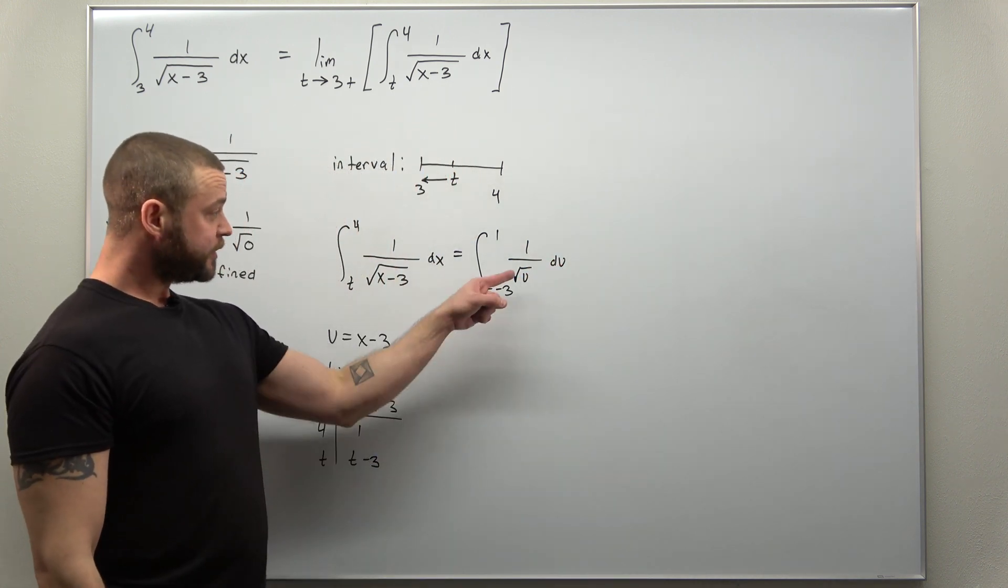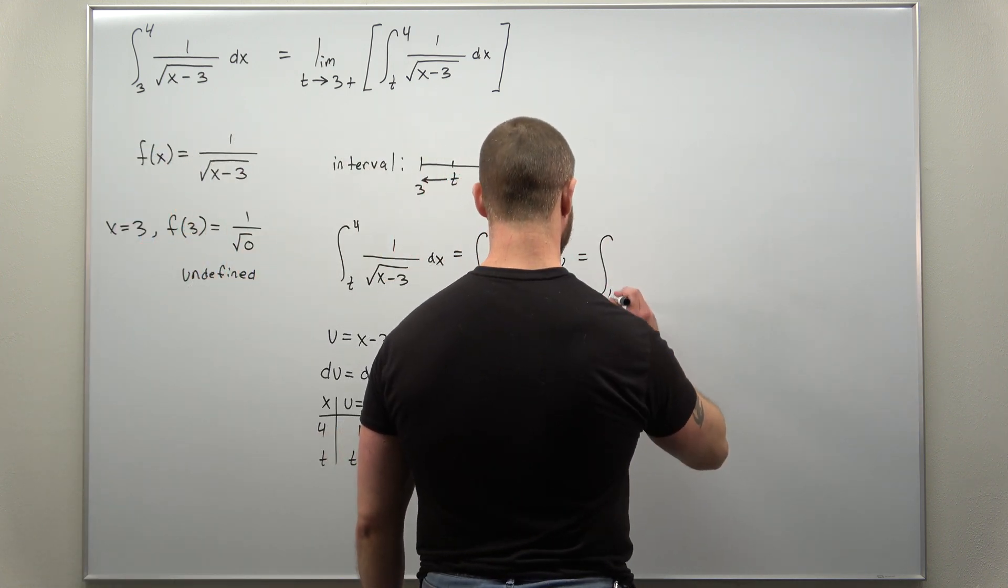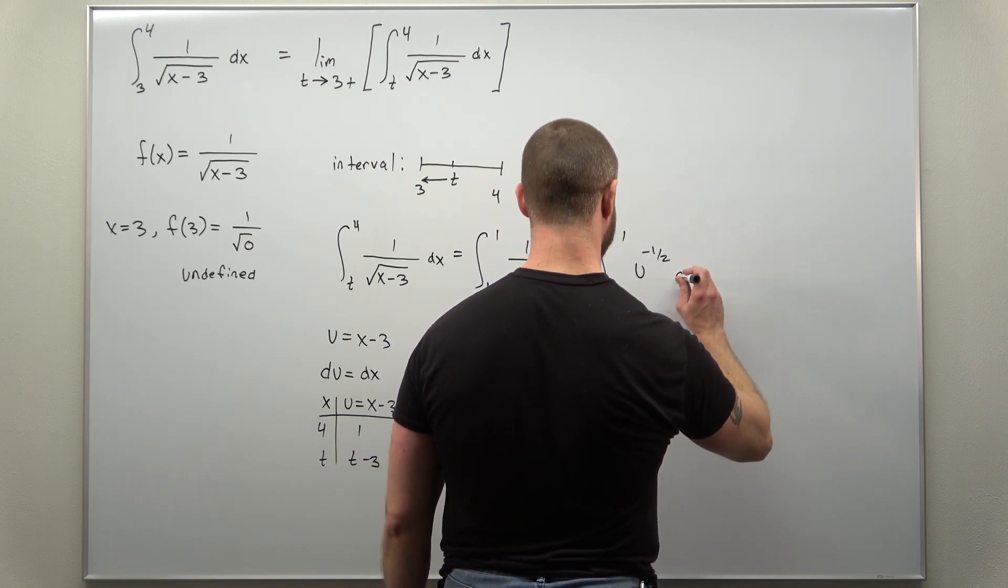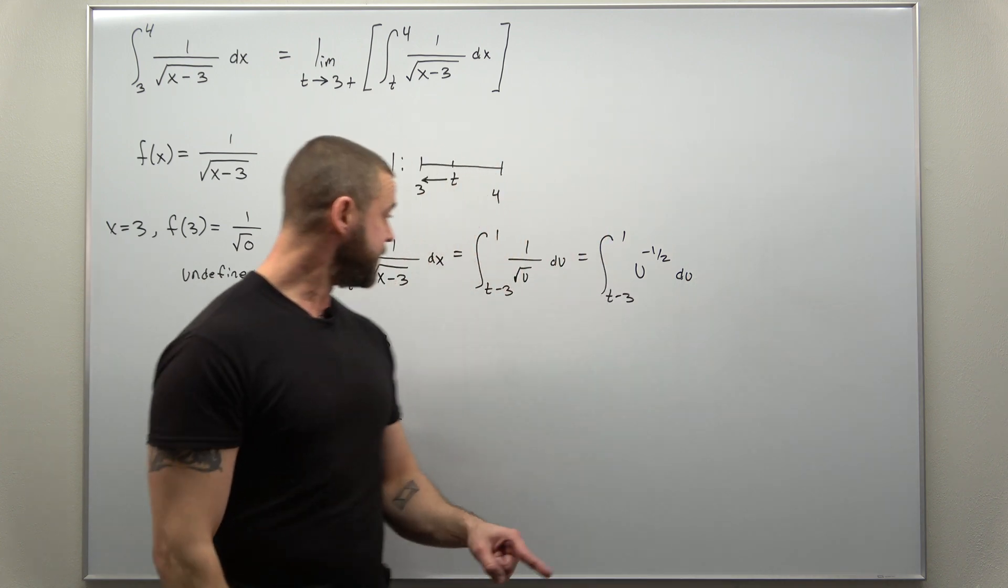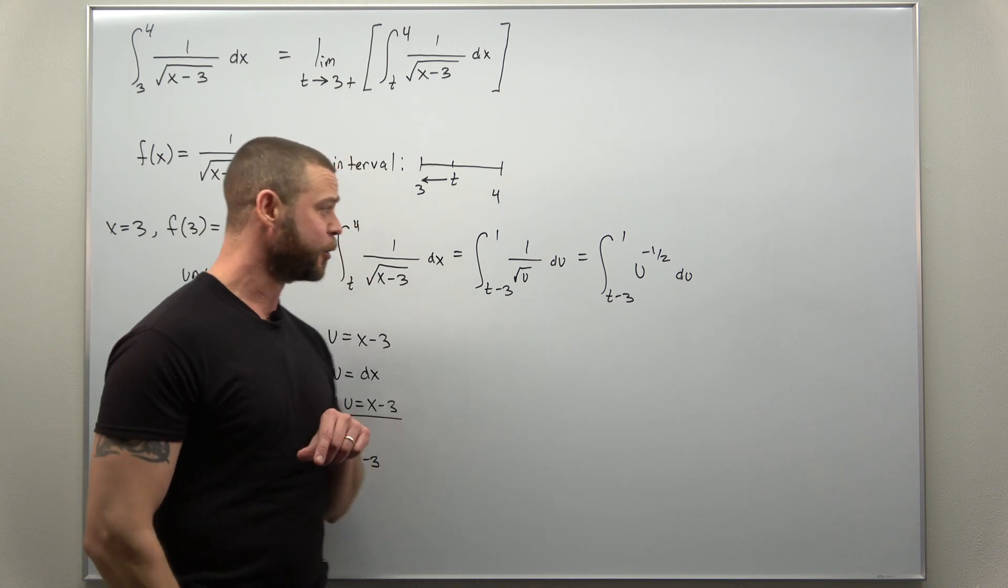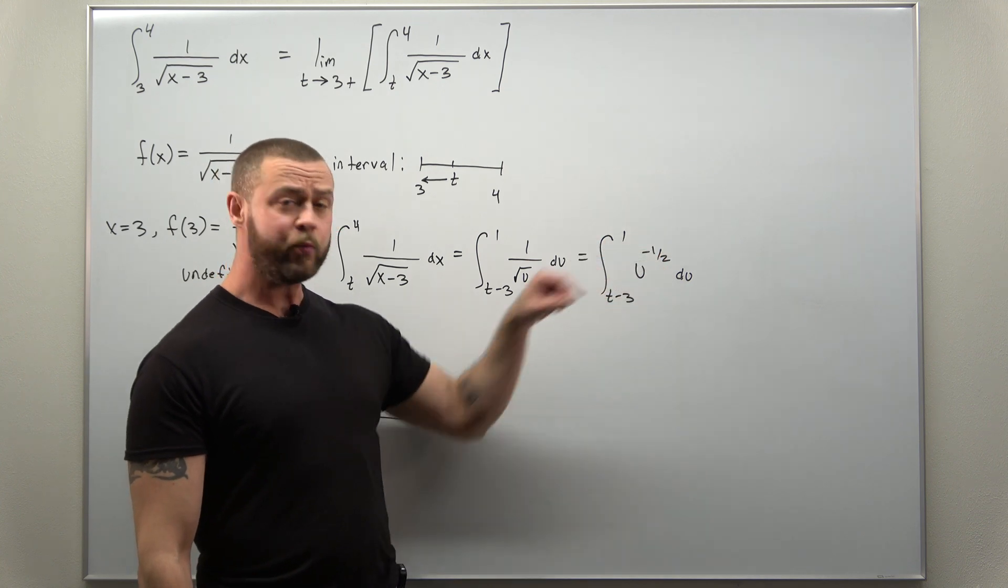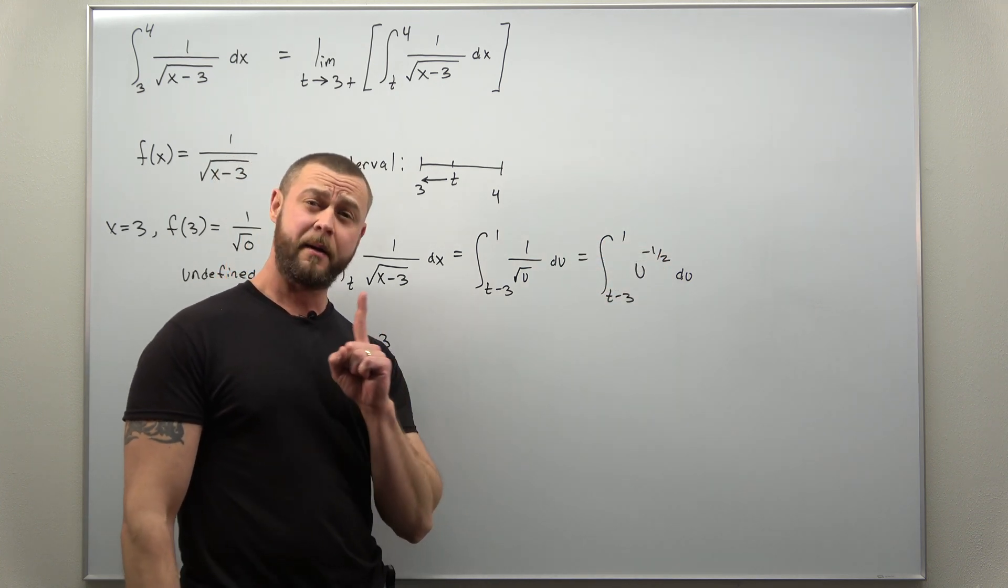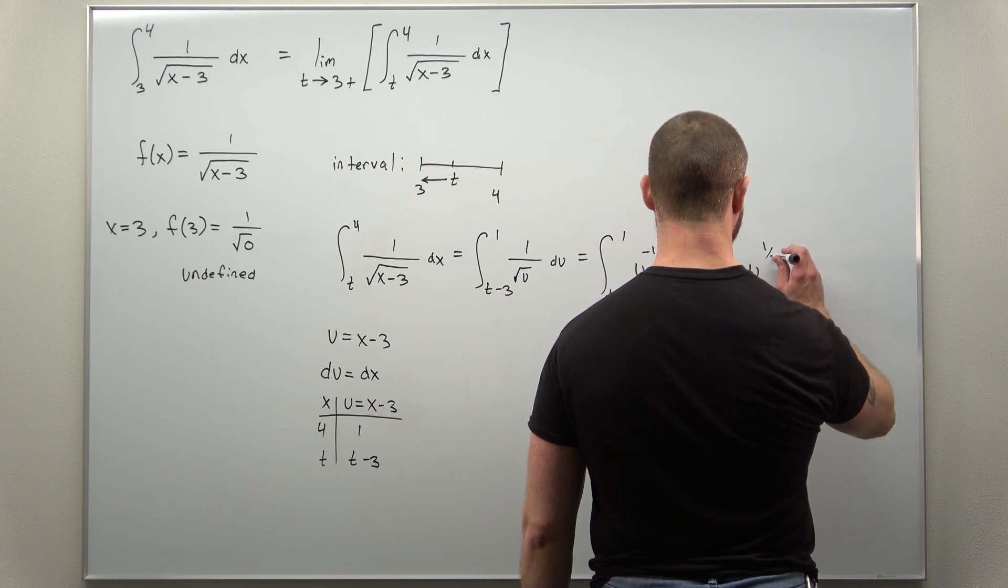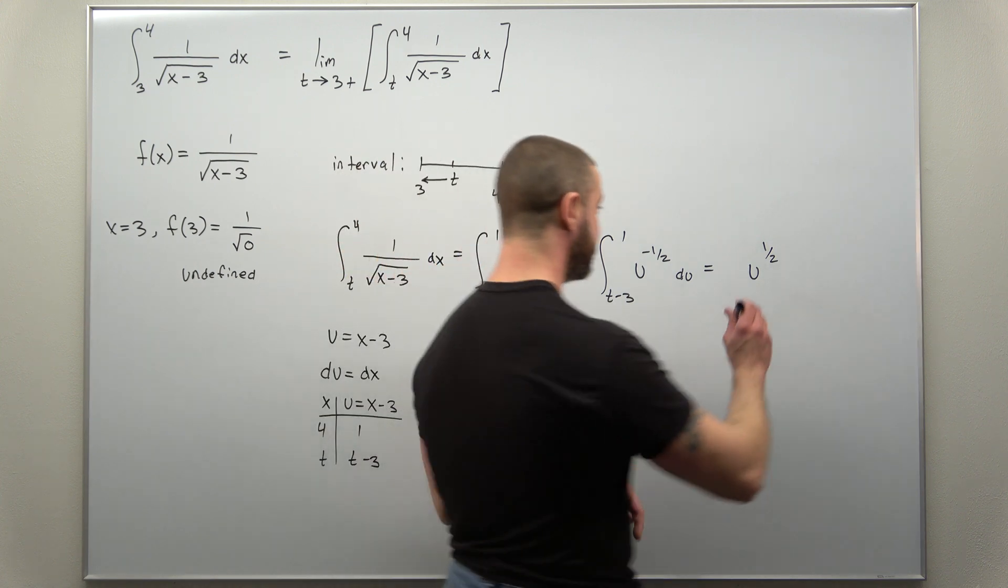You can rewrite the square root of u as a power, so we can rewrite that as u to the negative one-half—negative because the square root is in the denominator, and the square root corresponds to the one-half power. We can apply the basic power rule here. Looks like we add one to our exponent, we'll get positive one-half, and we divide by the new power. We're dividing by a half, same as multiplying by two.